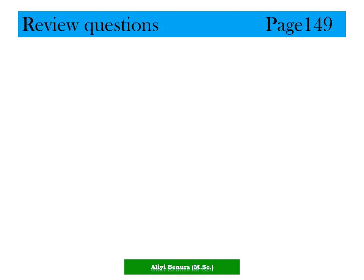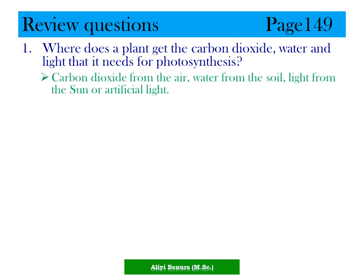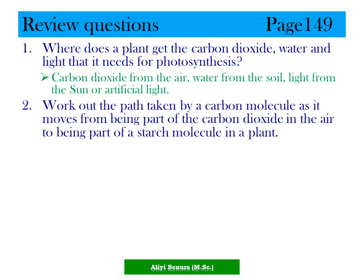Review questions, page 149. Where does a plant get carbon dioxide, water, and light needed for photosynthesis? Carbon dioxide comes from the air. Water is from the soil. Light is from the sun, or it may be artificial light. Question 2: work out the path taken by carbon molecules as they move from being part of carbon dioxide in the air to being part of starch molecules in plants.